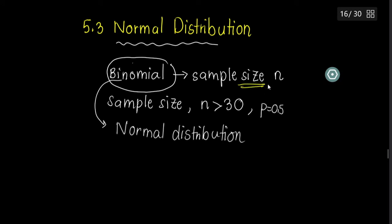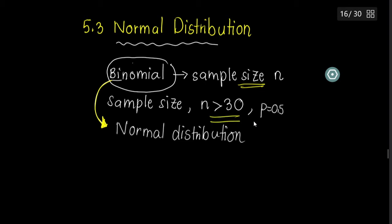So instead of binomial, we will use normal distribution. Remember why we use normal: binomial is used for a standard sample size, usually below 30. But when your sample size is more than 30 and your probability of success is around 0.5, you use normal distribution.